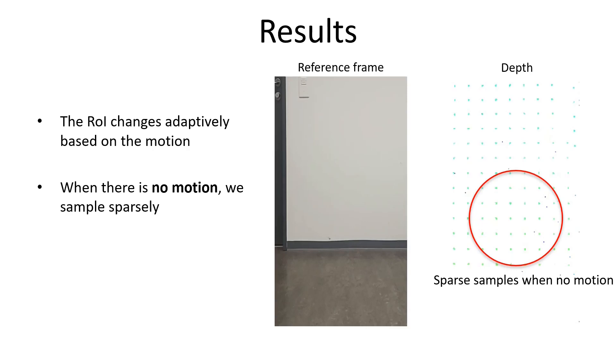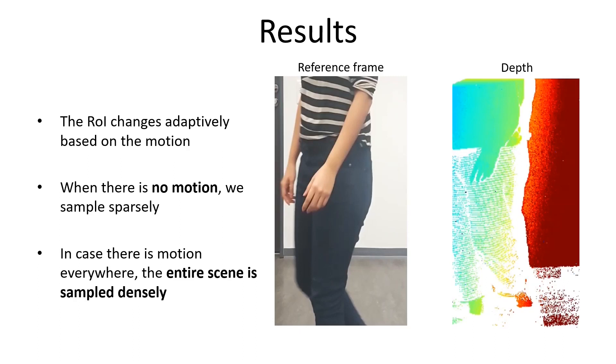In the case where there are events generated everywhere, where the human motion generates activity in the entire image plane, this results in dense sampling of the entire sensor plane.